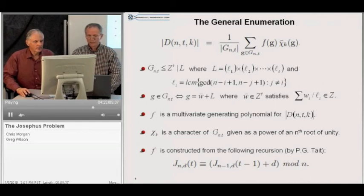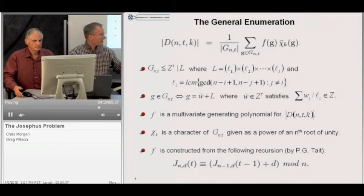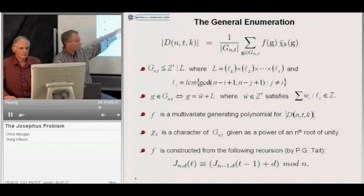The group g that appears in our general enumeration formula is a subgroup of z t mod l, where l is a product of certain cyclic groups. The generators of that group are related to elements of gamma n t, as shown in this expression right here.